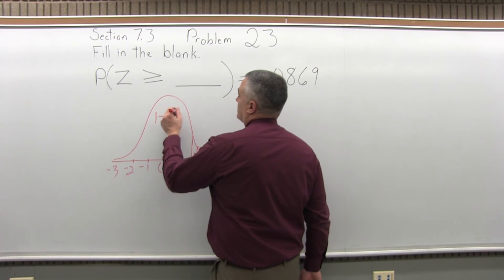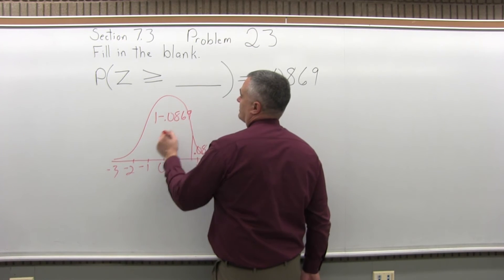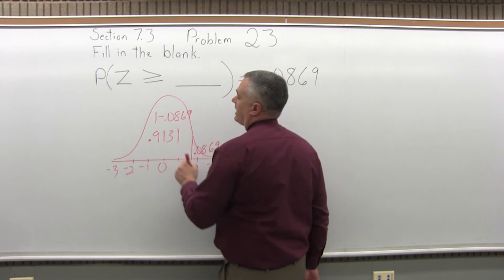We'll just do 1 minus .0869, which you can find out easy enough, is .9131.